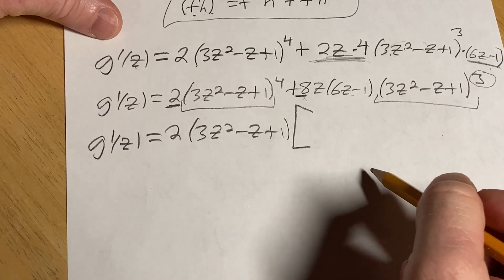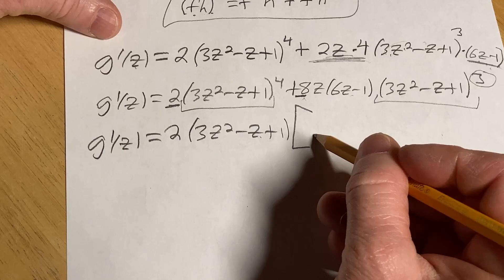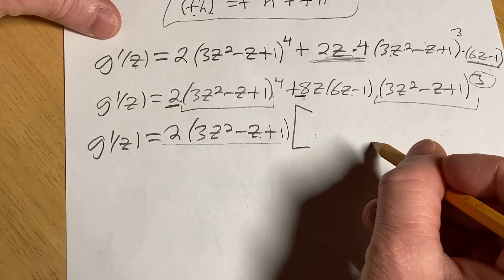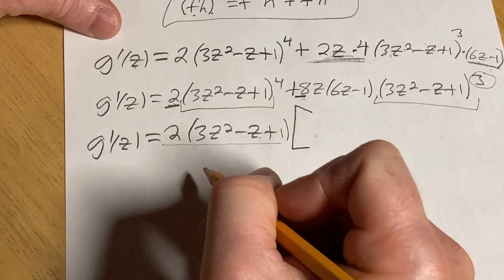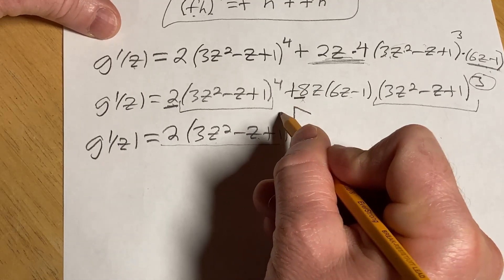And now we ask ourselves, okay, so these are the things we're factoring out. What do we write here so that when we multiply this by whatever is here, we get this? We've already got a 2.